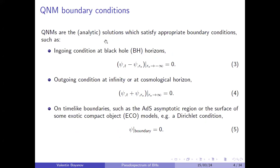Quasi-normal modes are the solutions to this equation that satisfy the appropriate boundary conditions ensuring they decay toward the future. At the black hole horizon where the tortoise coordinate goes to minus infinity, we impose a purely ingoing condition. At infinity or at the cosmological horizon where the tortoise coordinate goes to plus infinity, we impose a purely outgoing condition, and we can impose these free-wave conditions because the potential goes to zero in these regions.